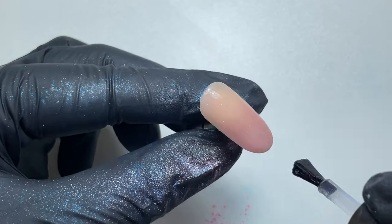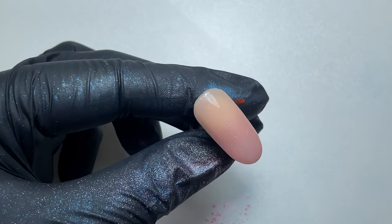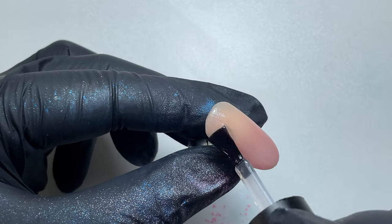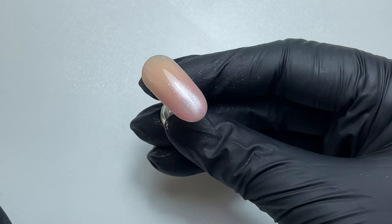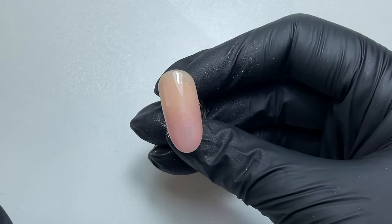Once I'm happy with the color I can go straight in with my Super Shine top coat, popping that all over the nail plate, and then cure it for 60 seconds. And there you have a really super subtle but pretty ombre.